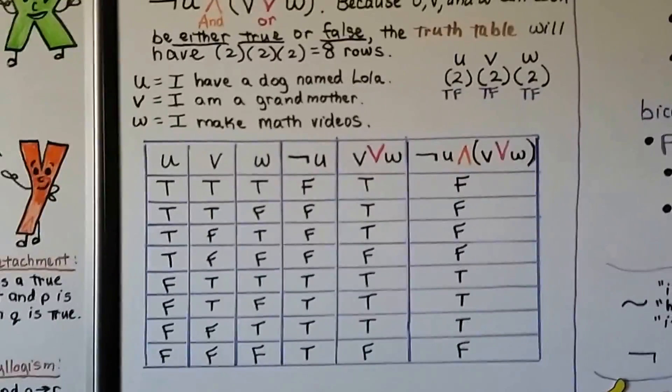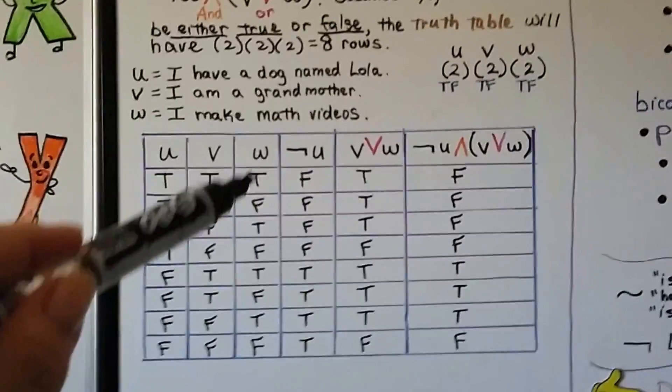So we can take the truth value of these statements. They're all true. And in our truth table, we can say U is true, V is true, W is true.